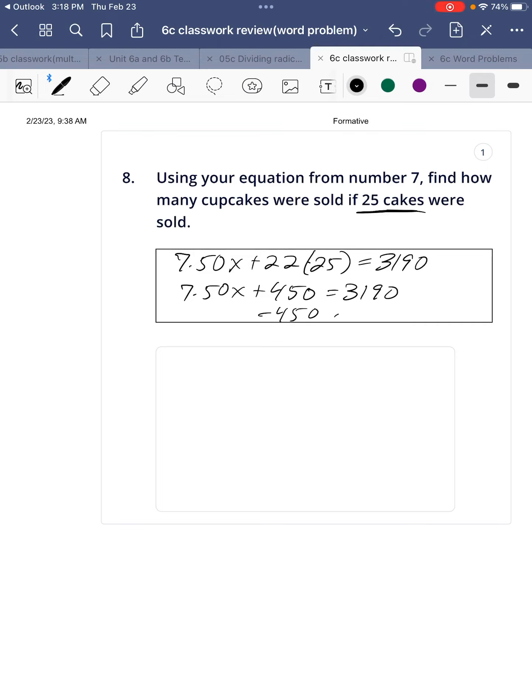$3,190. I'm going to subtract the $450. And you might have to do this on your own. So $2,740 divided by $7.50. And I honestly do not remember the answer here and I don't have a calculator with me.